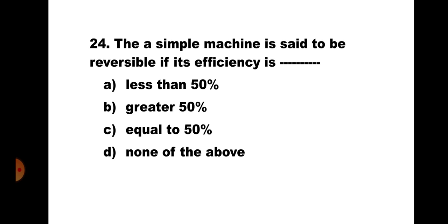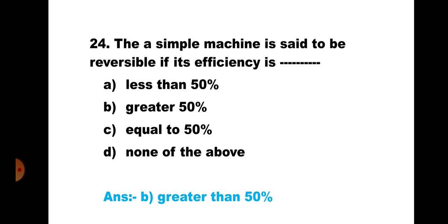Question number 24: A simple machine is said to be reversible if its efficiency is: A) less than 50%, B) greater than 50%, C) equal to 50%, D) none of the above. If efficiency is greater than 50%, the machine will reverse. The correct answer is B) greater than 50%.